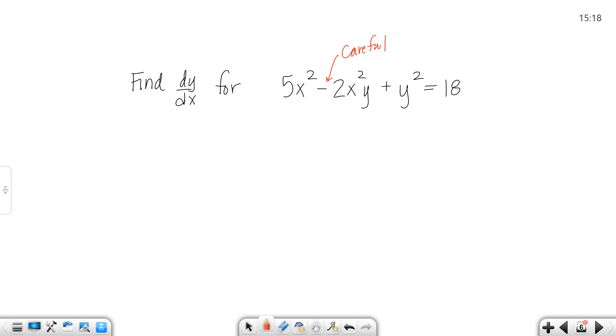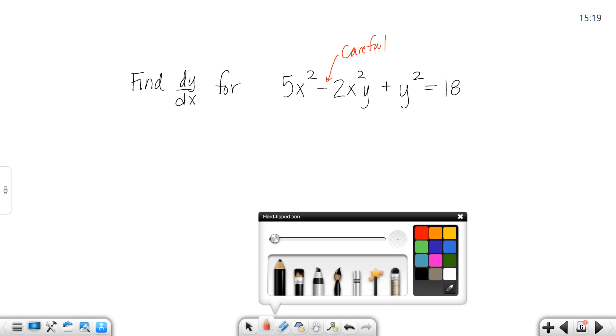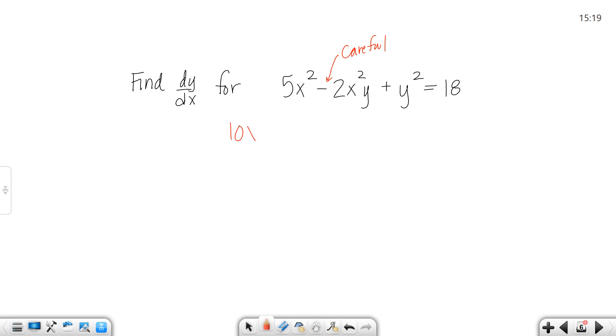Hey, you'll notice I made a little note on this one. Be very careful with that negative. That is going to cause us a little trouble. So let's take the derivative. Let's get the easy part out of the way. The derivative of 5x squared would be 10x.